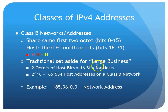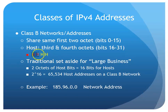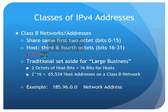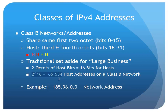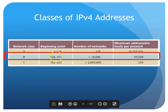Class B was set aside for large businesses. IANA would dictate the first two octets to you, and the remaining two were for you to use as needed. With those two remaining octets — 16 bits — two to the 16 allowed 65,534 addresses for hosts on your network. A Class B address like 185.96 would have a first octet in the range of 128 to 191.